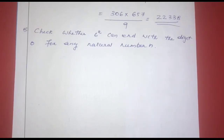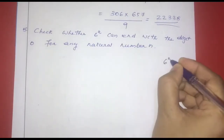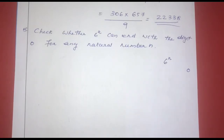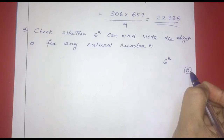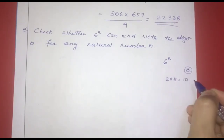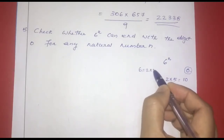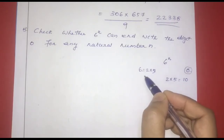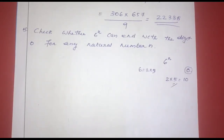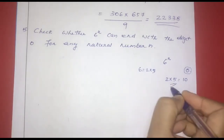Next question: Check whether 6 raised to n can end with the digit 0 for any natural number n. For a number to end with digit 0, it must have 10 as a factor, which requires both 2 and 5 as prime factors. The prime factorization of 6 is 2 × 3, so 6 raised to n = 2ⁿ × 3ⁿ.